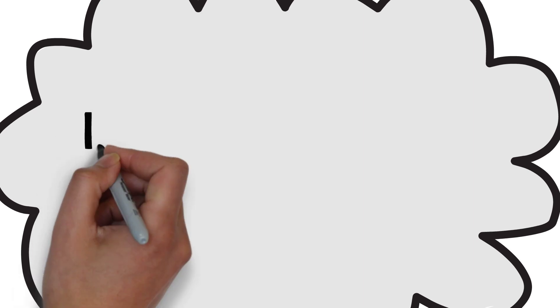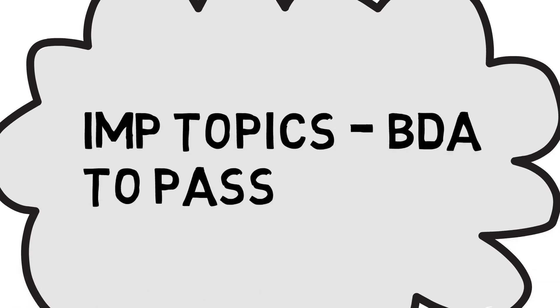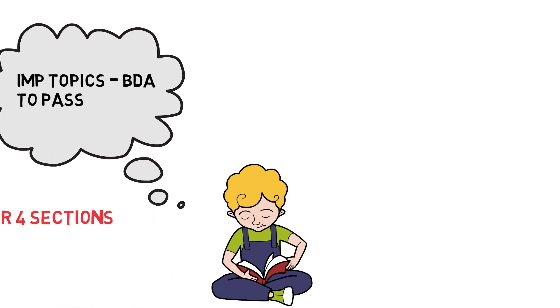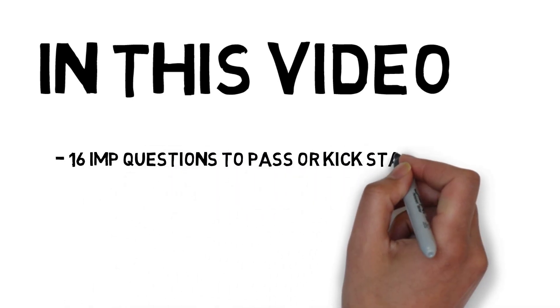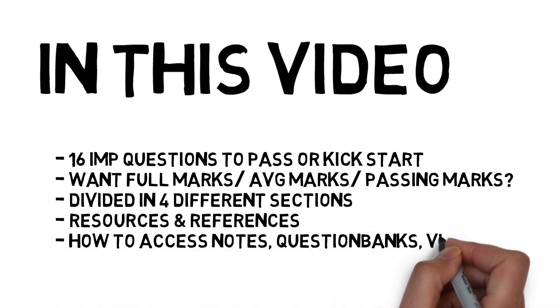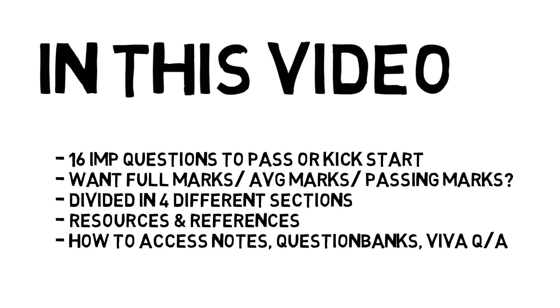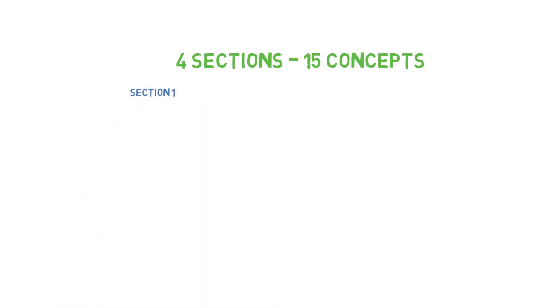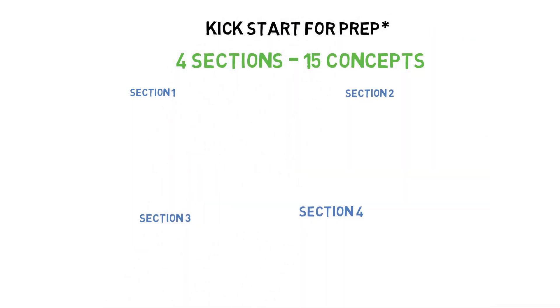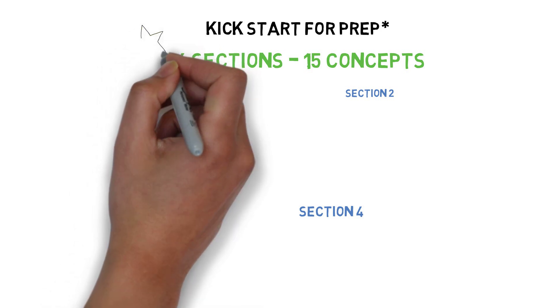Hey guys, welcome back to BDETERS. In today's video we will be talking about important questions which you have to do in BDA in order to get a kick start for your subject. We will be checking 14-15 questions which you have to finish in BDA, and then I will tell you where to do more questions. We should always have the worst case preparation done already. We will discuss the 15 questions and where more questions are available. In BDA it is total 15 questions and we have divided it into 4 sections — section 1 will be very important and section 2, 3, 4 accordingly.